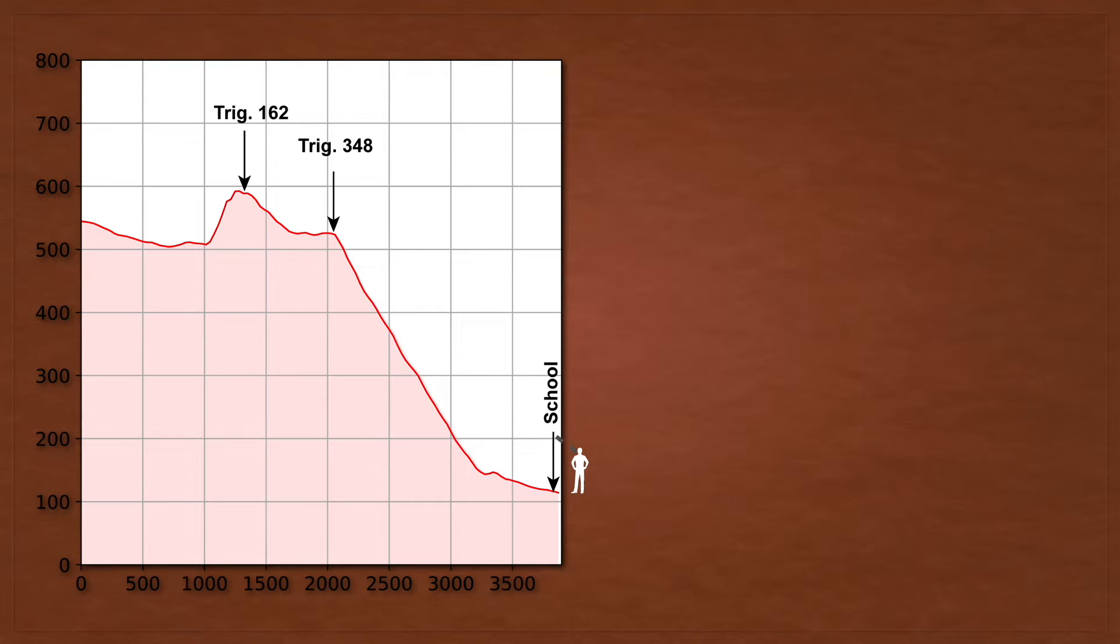But now, would you be able to see Trigbeacon 162, that mountain there? No, it won't, because Trigbeacon 348 is blocking your view. And so can you see while the one is taller? You cannot see.